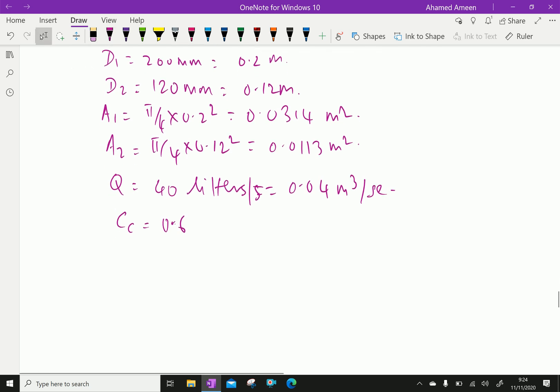Velocity at section 1, V1 equals 0.04 divided by A1 which is 0.0314, which gives 1.274 meters per second.